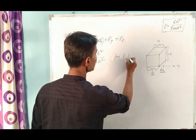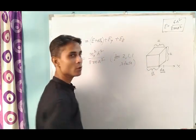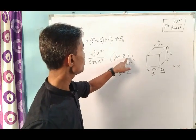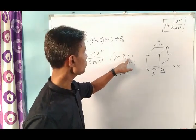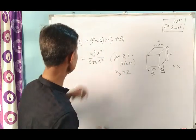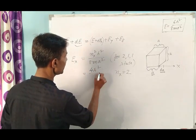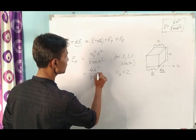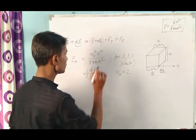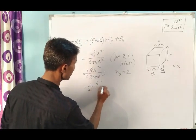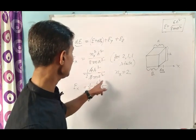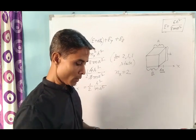For the (2,1,1) state, Nx is equal to 2, Ny is equal to 1, and Nz is equal to 1. Putting the value of Nx into this equation, we get Ex equal to 4h² divided by 8mA², which simplifies to h²/2 divided by mA², so Ex is equal to h²/2mA².